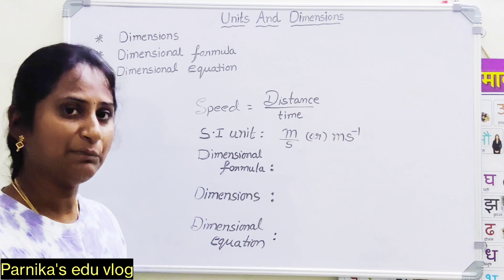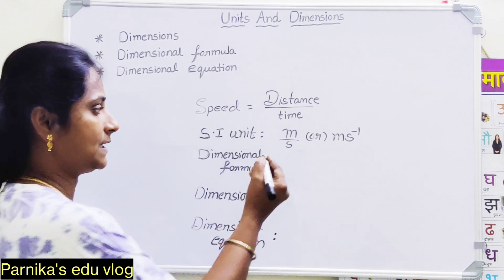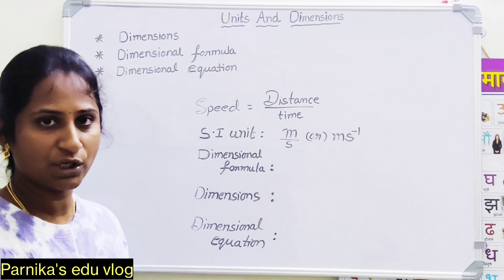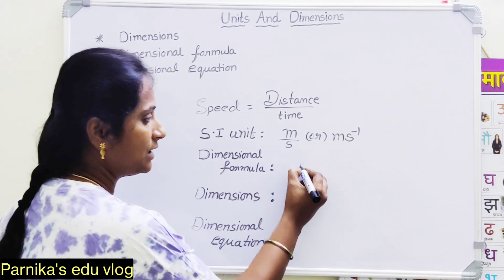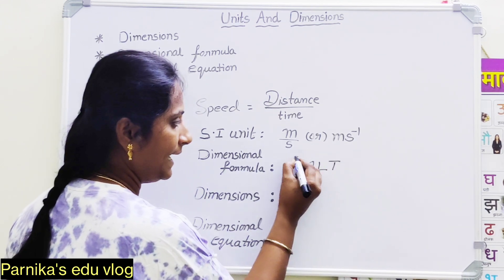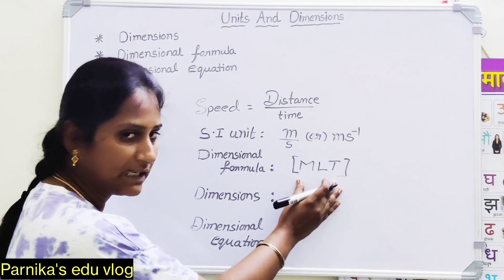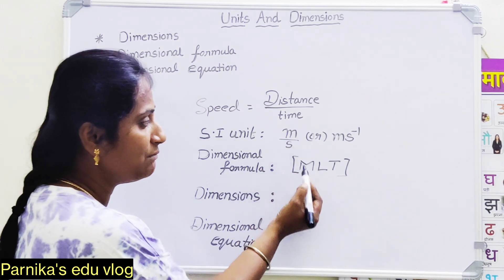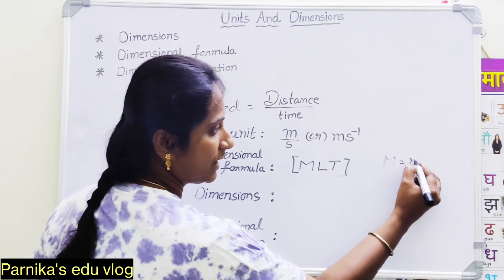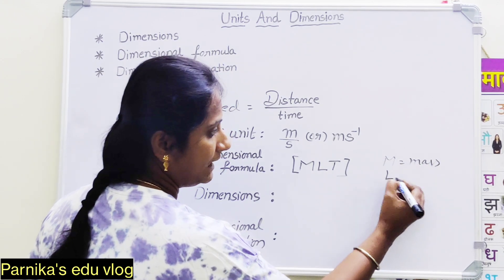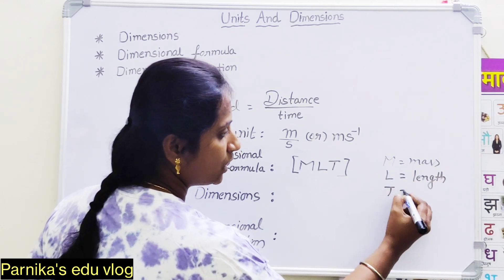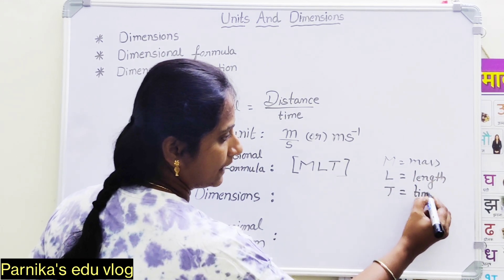How do we write the dimensional formula for speed? The dimensional formula is represented using three basic physical quantities: mass (M), length (L), and time (T), enclosed with square brackets.